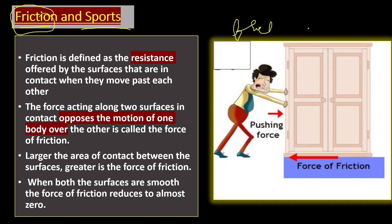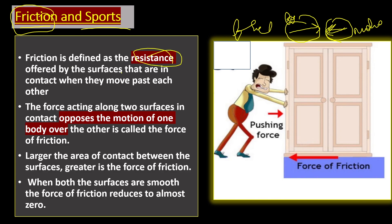Next topic is friction. Friction is a resistance — when two bodies move over each other, friction occurs. The surface force tries to stop the motion. Friction is defined as the resistance offered by surfaces that are in contact when they move past each other, and the force acting along two surfaces in contact opposes the motion of one body over the other.